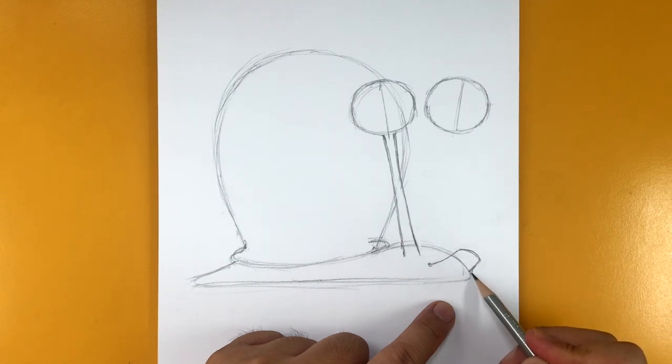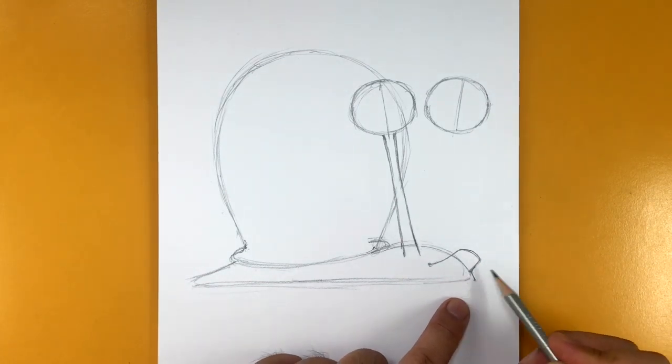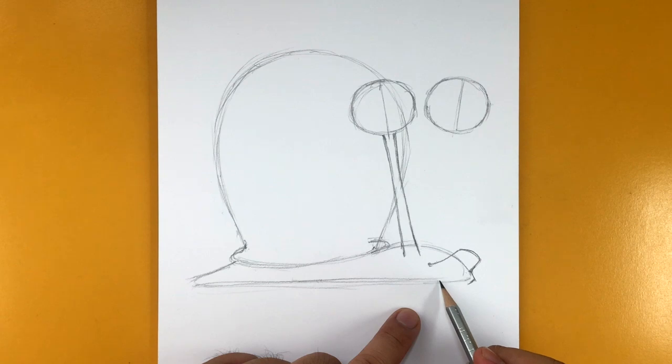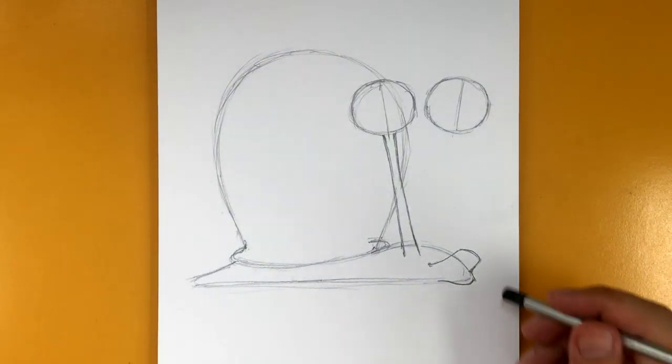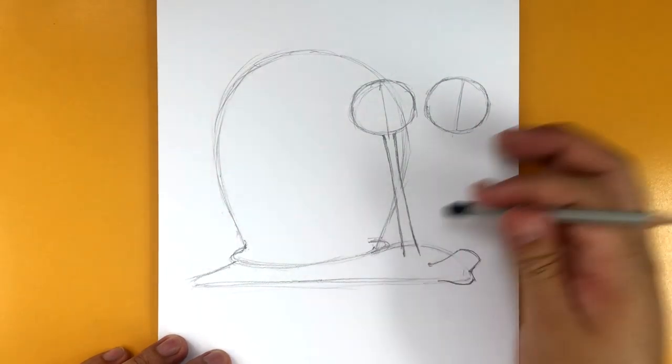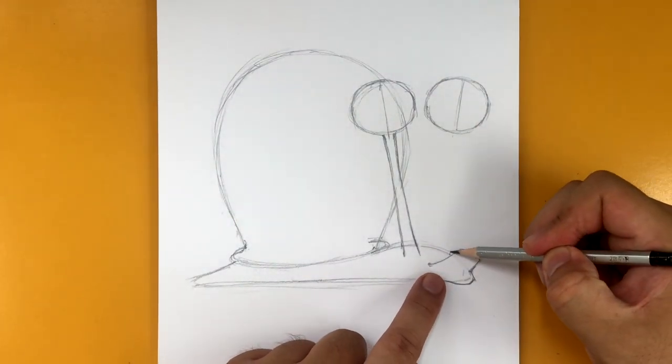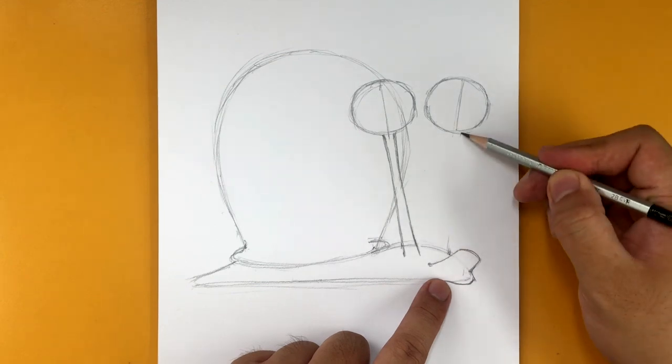Like that. And then this goes this way and curves in like so. Okay. So now we know where we want the eye, this eye, the left eye to connect.